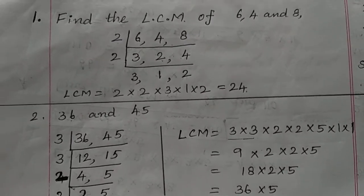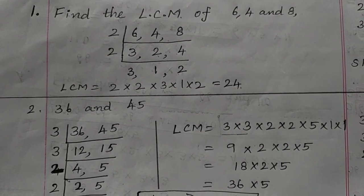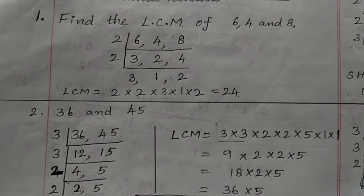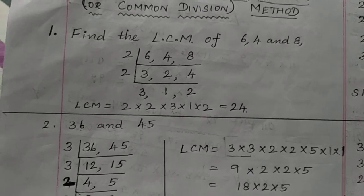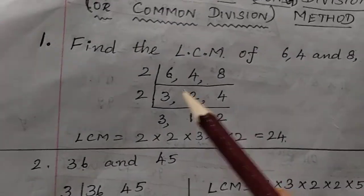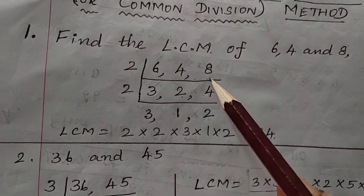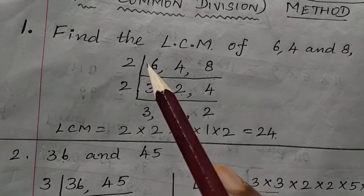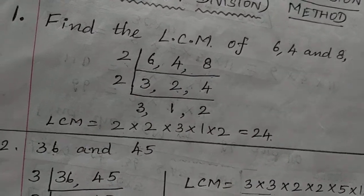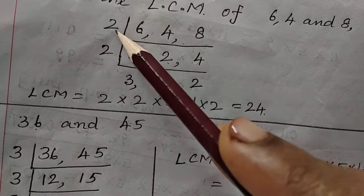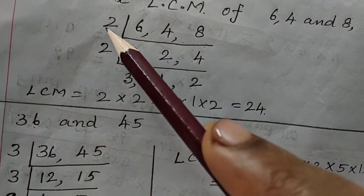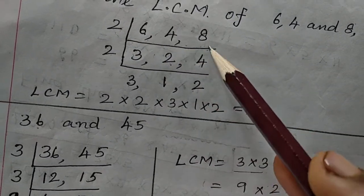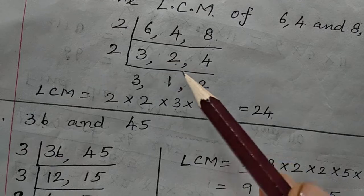Some call it the long division method or common division method, but this is the short division or shortcut method. Let us find the LCM of 6, 4, and 8. Write 6, 4, and 8 together and divide all three by the same number. Divide by 2: 6 ÷ 2 = 3, 4 ÷ 2 = 2, 8 ÷ 2 = 4.